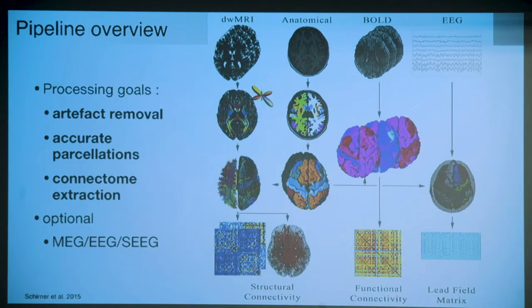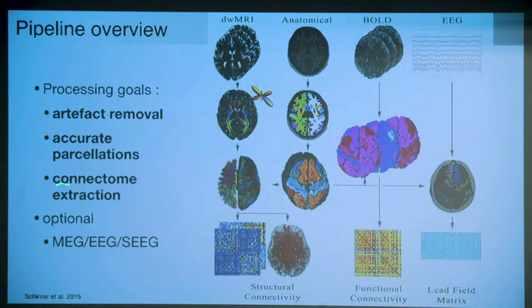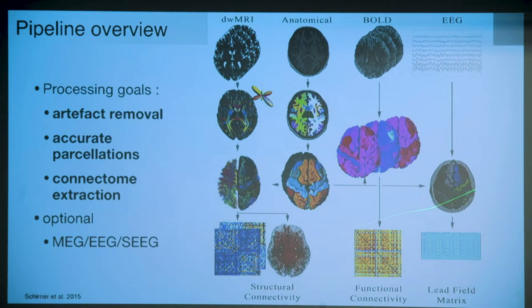The overview of the pipeline - taken from a scheme from Schörner - is: we start with data, clean it from artifacts and distortions in your time series, then generate accurate cortical and subcortical parcellation. You want regions that really correspond to functional units. In the end, you extract your connectome: you have the tractogram from diffusion weighted imaging, lay the cortical parcellation on top, and get your structural connectivity - represented as a 3D graph or as an adjacency matrix.